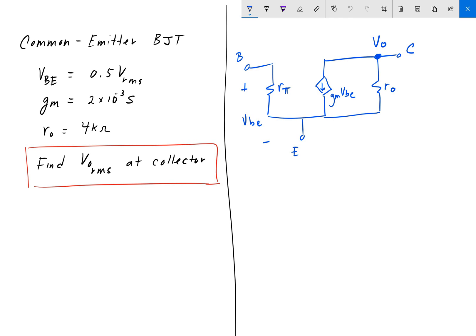Okay, so we have this current, GmVBE, and the current actually flows in this direction, so we have a current of GmVBE. We're going to ignore the sign, and just get Vout.